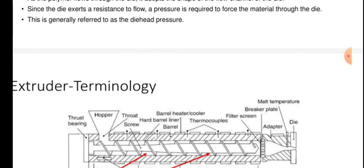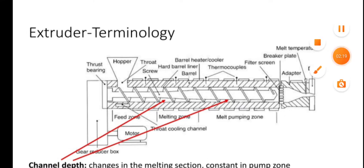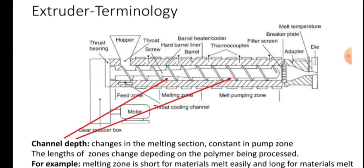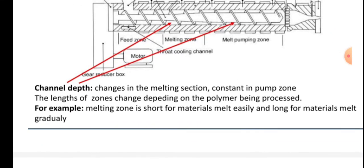This pressure is generally referred to as the die head pressure. The extruder terminology is shown in the figure. Components include: thrust bearing, upper throat, screw, barrel, barrel liner, barrel heater or cooler, thermocouples, filter screen, breaker plate, melt temperature sensor, die, feed zone, melting zone, and melt pumping zone.